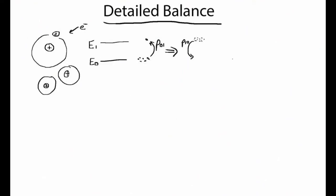Let's start our experiment over again. We put all of our atoms into the ground state and start playing forward. In the beginning, there are no atoms in the excited state, so there are no de-excitations happening. But there are lots of atoms in the ground state, so when collisions happen, they preferentially transition up. But as soon as we start getting more atoms in the excited state, some of those start transitioning back down through de-excitations.